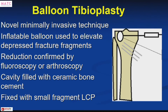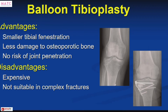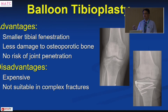A novel technique is balloon tibioplasty, inspired by the vertebroplasty technique. An inflatable balloon is used to elevate the depressed fracture fragments; reduction is confirmed with arthroscopy or fluoroscopy, and the resulting cavity is filled with ceramic bone cement before minimally invasive fixation. The fenestration needed is only 4 mm, which is advantageous for osteoporotic bone. However, this is expensive, still experimental, and suitable only for limited joint depression with an intact surrounding cortex — not for complex fractures.